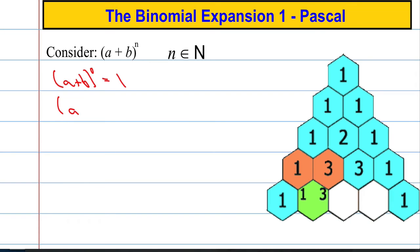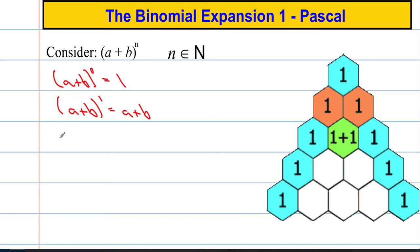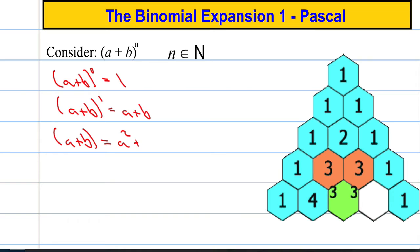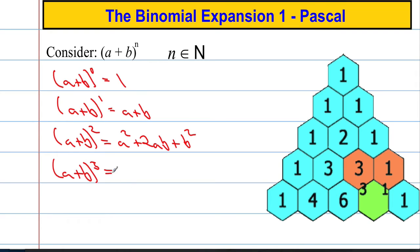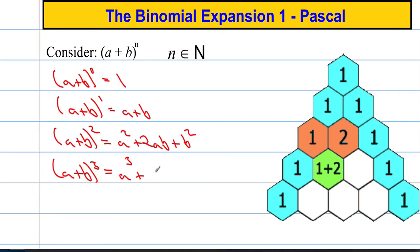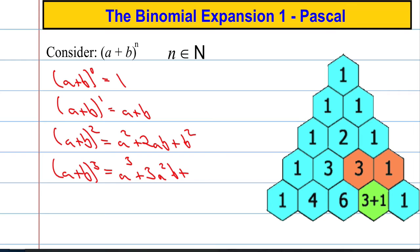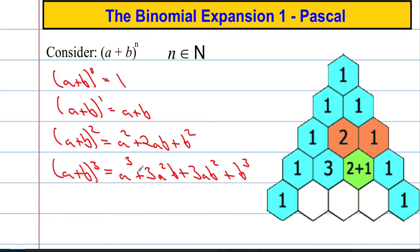Now let's do a plus b to the power of one — that's simply going to be a plus b. And if we did a plus b squared and tidy it all up, we'd end up with a squared plus 2ab plus b squared. And we might even go so far as to do a plus b to the power of three, and if we were to do that and tidy it up, we'd end up with a cubed plus 3a squared b plus 3ab squared plus b cubed.